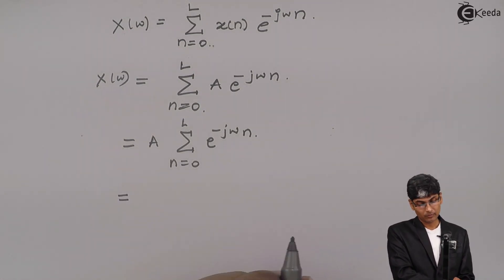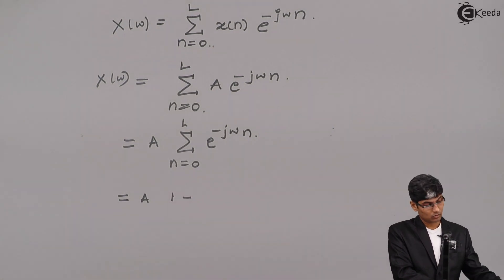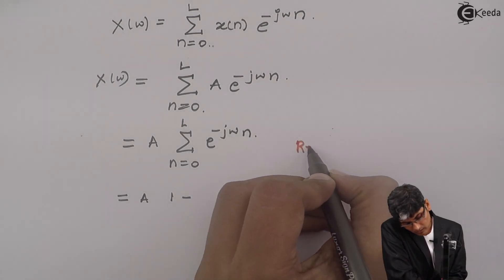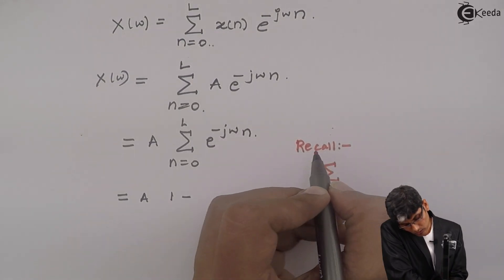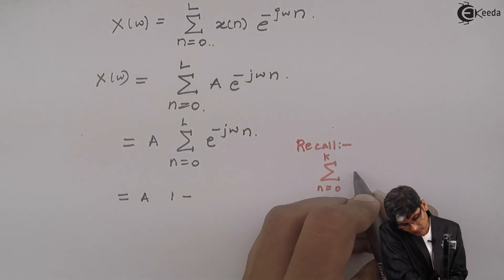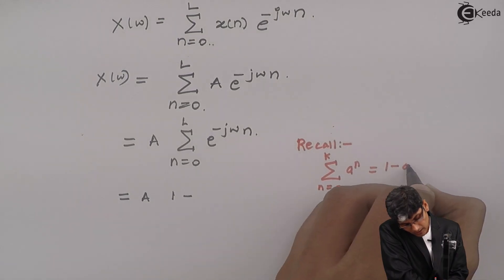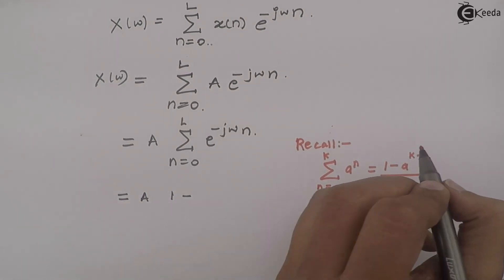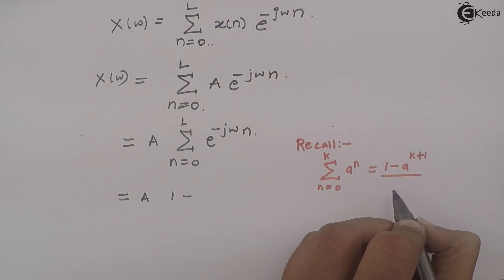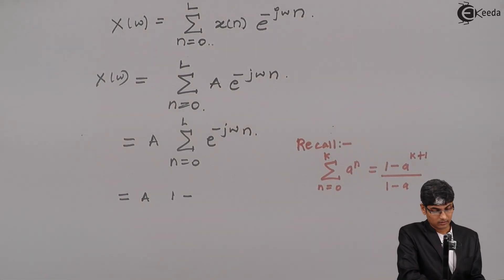Just to recall, the summation from n = 0 to k of a^n equals (1 - a^(k+1))/(1 - a). This is the series formula.